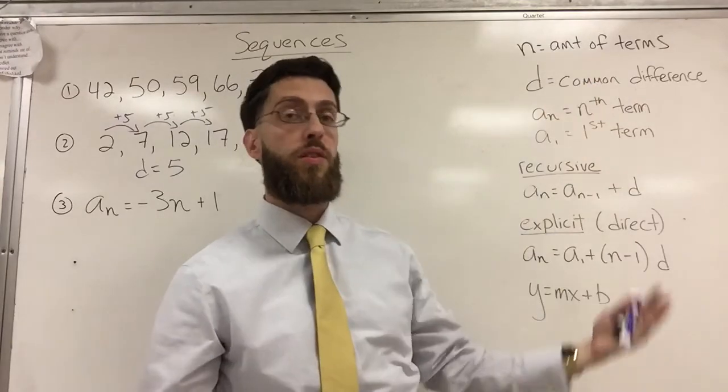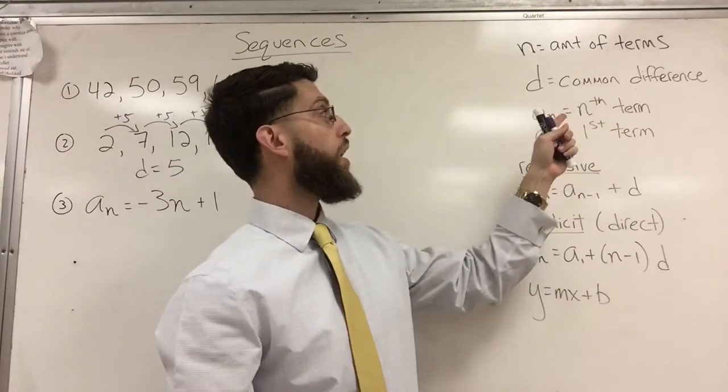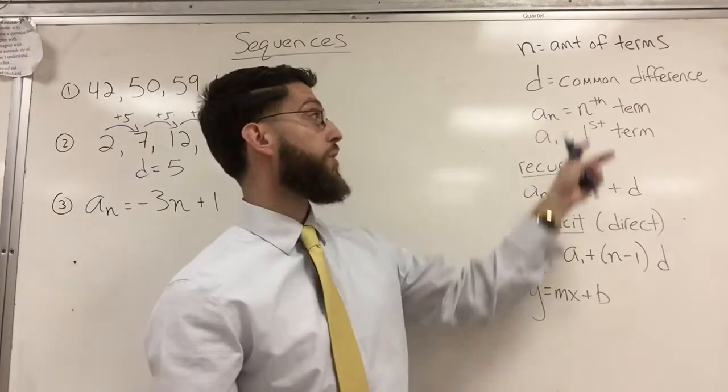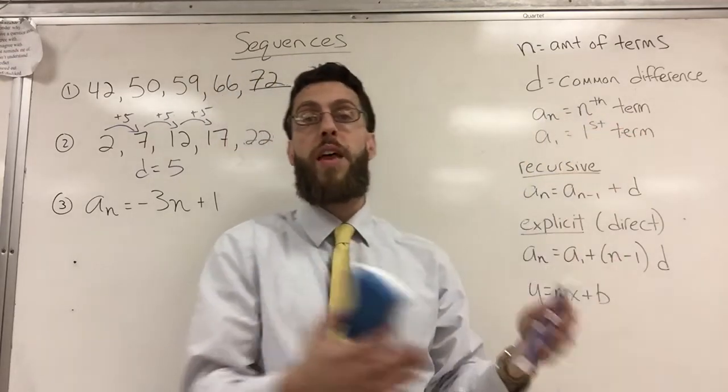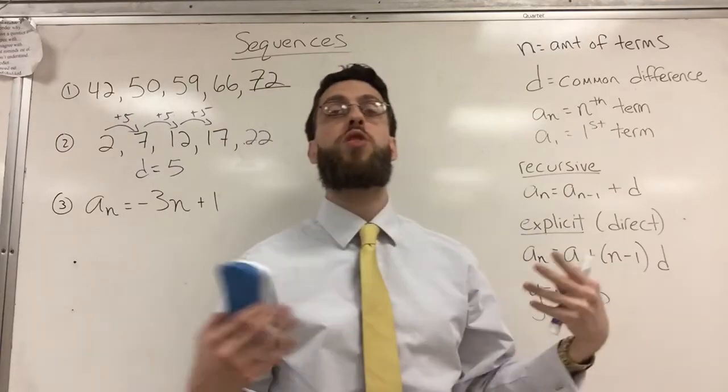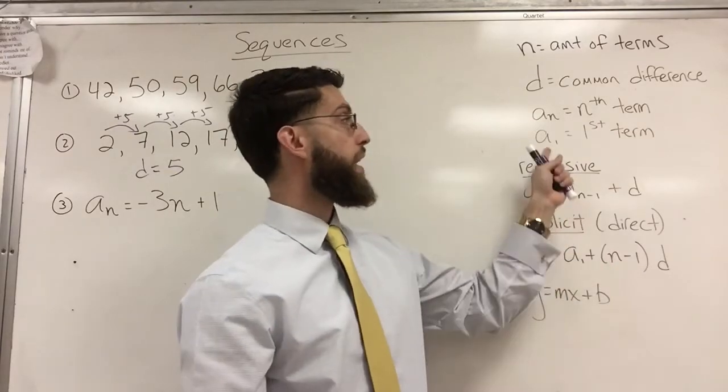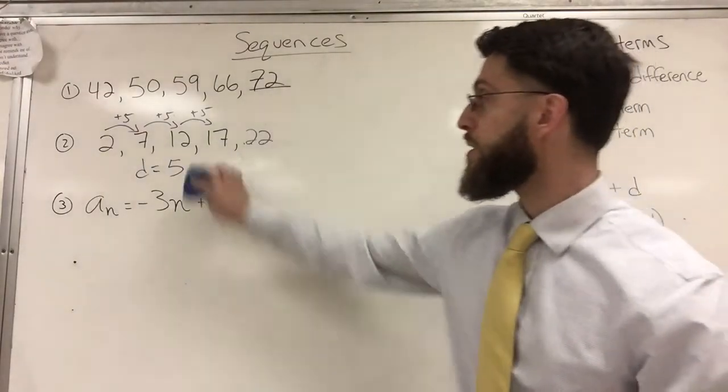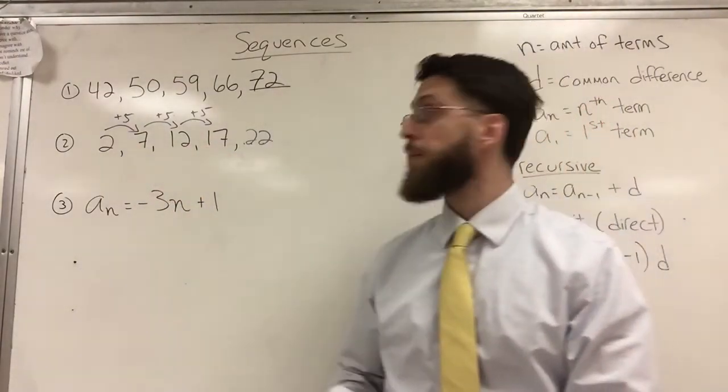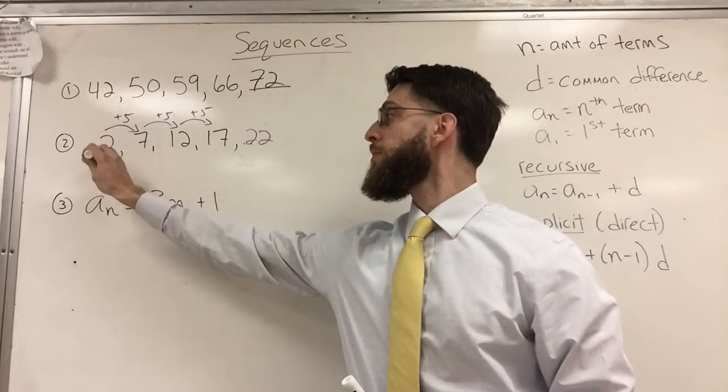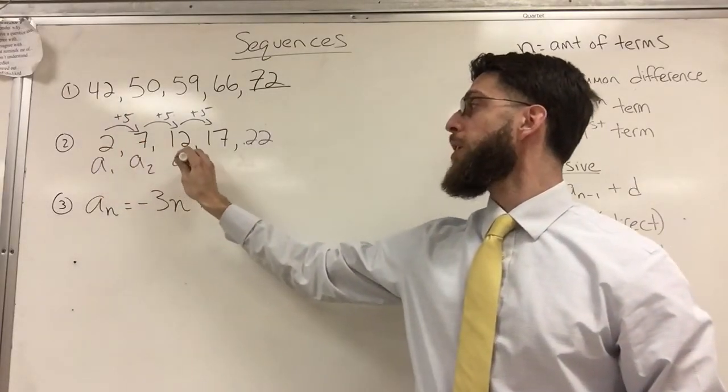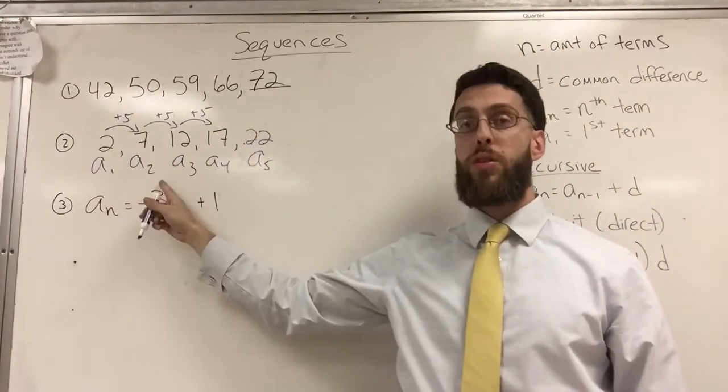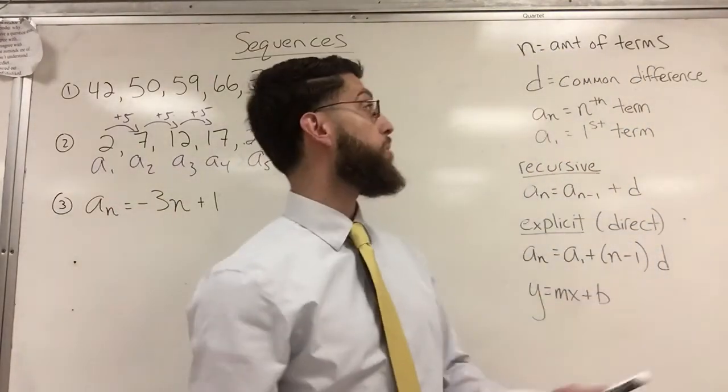D is the common difference, also known as the pattern or the rate. A sub N is just fancy notation for the Nth term - could be the 10th term, the 100th term, whatever term I want to get to. A sub 1 is always the first term. So really what you're looking at here is A sub 1, A sub 2, A sub 3, A sub 4, A sub 5. First term, second term, third term, fourth term, fifth term. That's what the notation means.